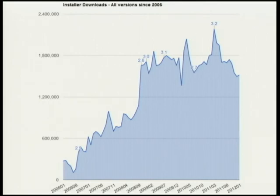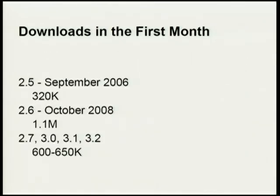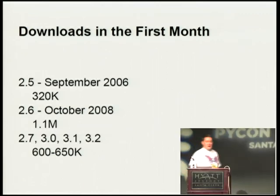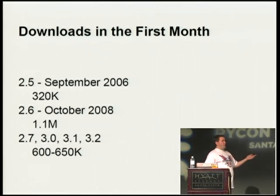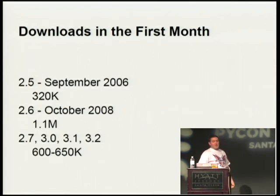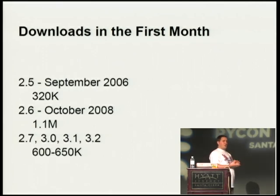This is all Windows downloads — not Mac, Linux, or anything like that. I just look for EXEs and MSIs downloaded throughout that period. In general, Python started to get much more popular and Windows just shoots right through the roof. In September 2006 when 2.5 came out, about 320,000 downloads of the 2.5 installers were done. 1.1 million for 2.6 when it came out. And 2.7 and all the 3.x versions, in their first month, get about 600 to 650,000 downloads.